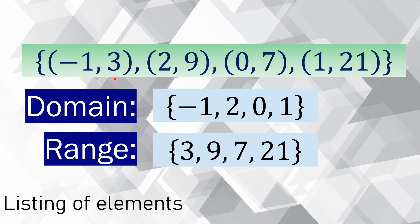For the range, we have 3, 9, 7, and 21. Listing is very possible because the elements of this set of ordered pairs, when it comes to the number of elements, it's just finite — it's just countable — so listing of elements is possible.